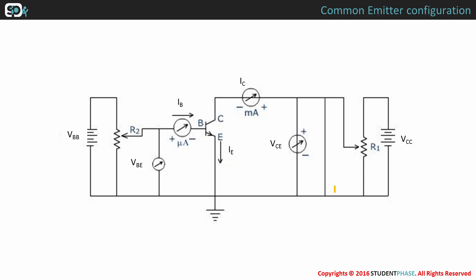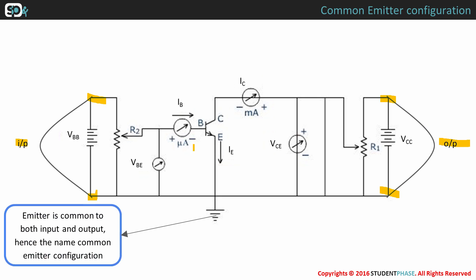The figure shows common emitter configuration of an NPN transistor. Input is applied between emitter and base, whereas output is taken from collector and emitter. Emitter is common to both input and output, hence the name common emitter configuration.